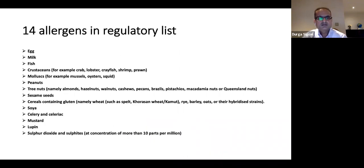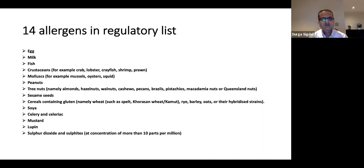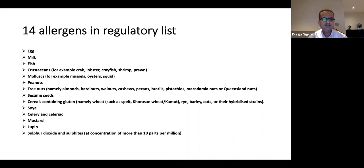There are 14 allergens that must be highlighted on food product packaging under UK and EU law (enacted around 2013–2014). Manufacturers must bold or highlight these common allergens in their packaging. These are visible on supermarket food labels.